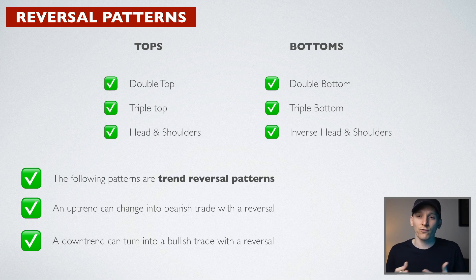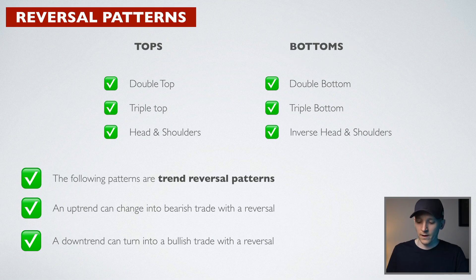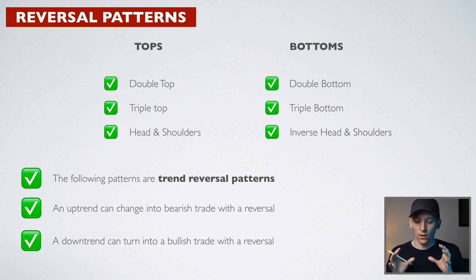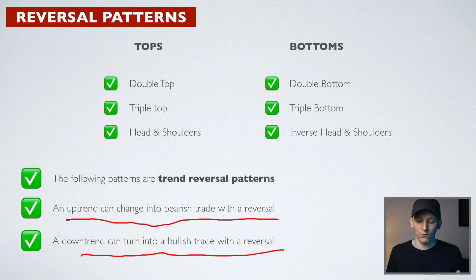Reversal patterns show a trend reversal. They can be in uptrends — showing a top and reversal back downwards — or in a downtrend, showing a bottom forming and then reversing to the upside. These are trend reversal patterns: either looking for the top of a market to short, or looking for the bottom to go long. An uptrend can change into a bearish trade with a reversal pattern, and a downtrend can turn into a bullish trade with a reversal pattern.